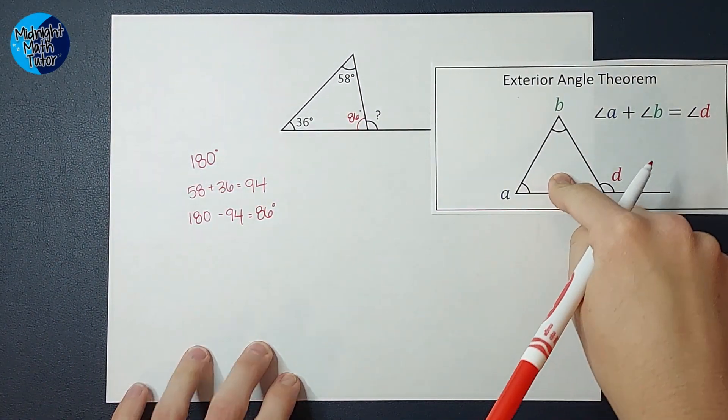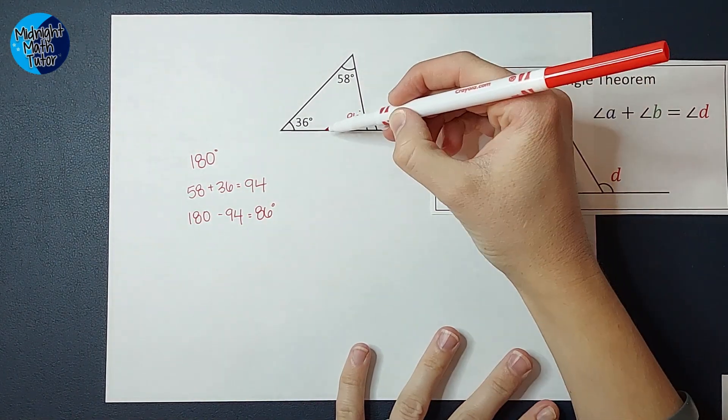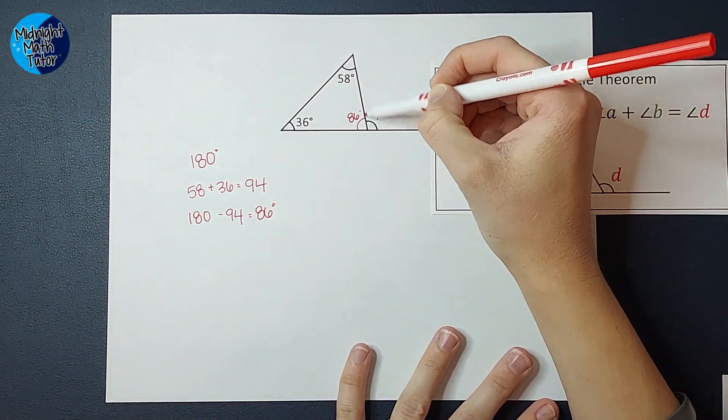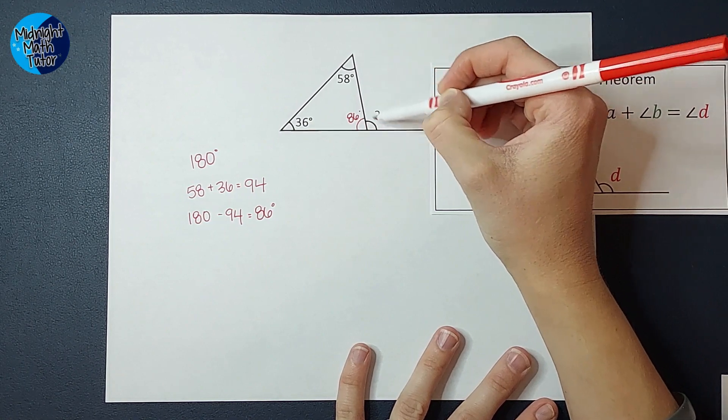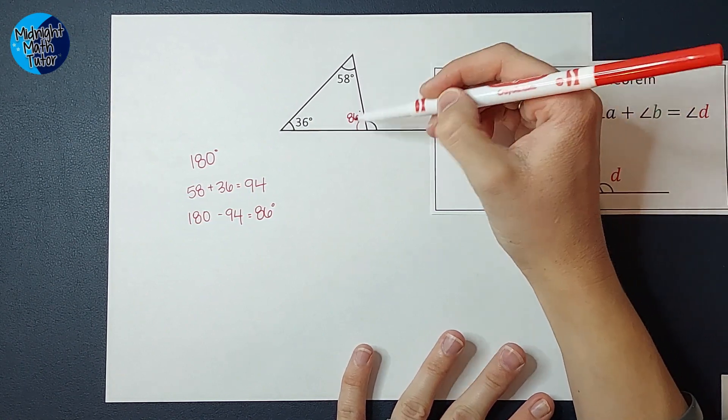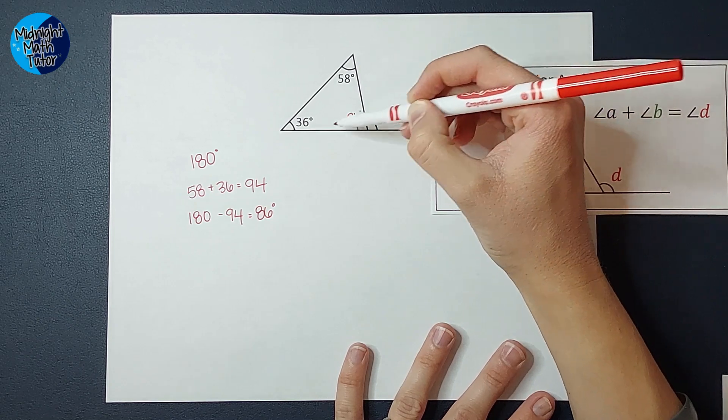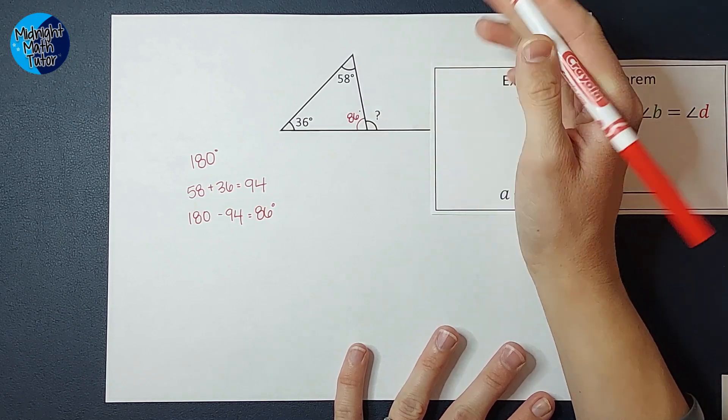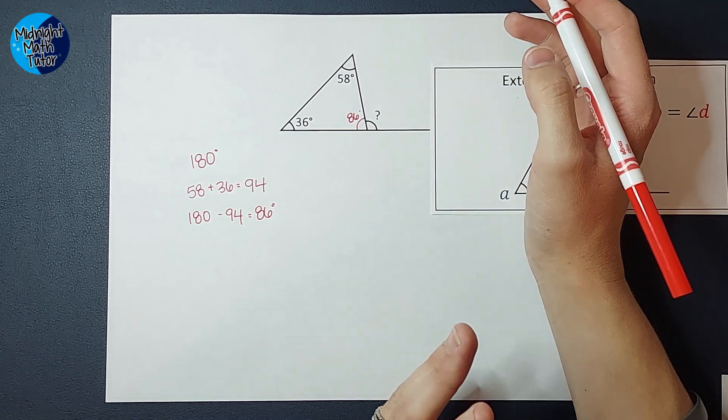Again, if I didn't know about this theorem, then I would take a look and say, this is a flat line with a line going through it, splitting it into two angles. But if it weren't split, I know that this whole thing, a flat line, that angle is also 180 degrees.